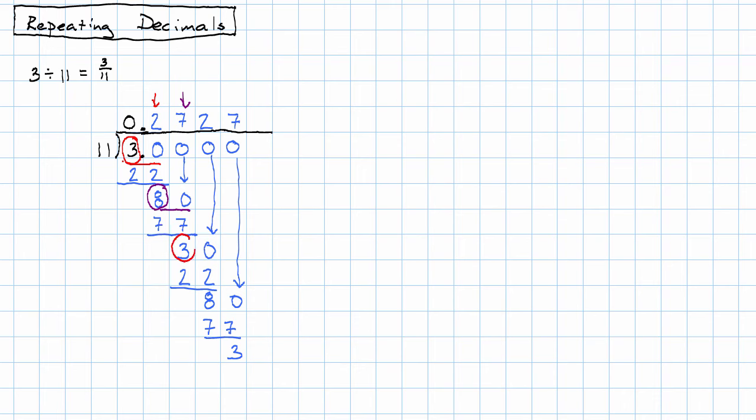So that pattern 3, 8, 3, 8, 3, 8 keeps going through the remainders, which means that the pattern 272727 keeps going through the quotient.